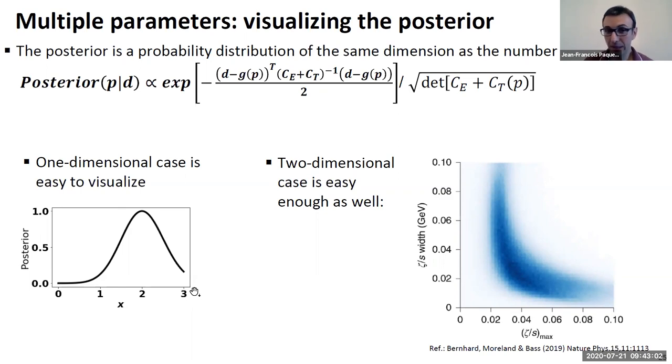Already in the 2D case, this becomes more challenging. If you have two parameters, one way to plot it is with this kind of density plots. This figure is from this Nature Physics paper from the Duke group. You have here, for example, the width of your bulk viscosity and maximum of your bulk viscosity. The darker color means that these regions are favored by data and the lighter color are less - they're disfavored by data.